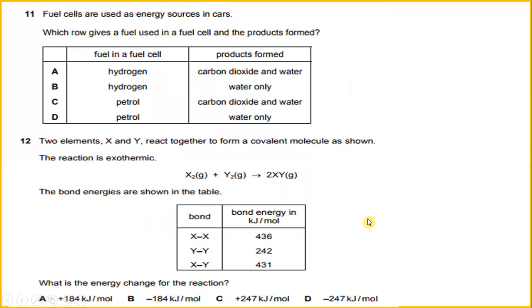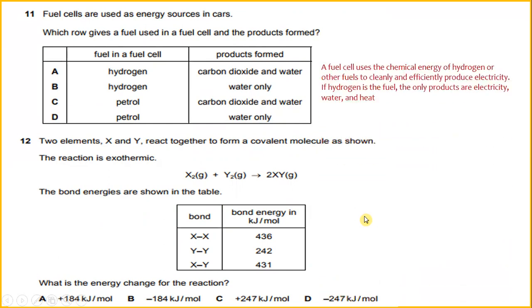Fuel cells are used as energy source in cars. Which will give the fuel used in a fuel cell and the product formed? Fuel cells use the chemical energy of hydrogen or other fuels to cleanly and efficiently produce electricity. If hydrogen is the fuel, the other products are electricity, water, and heat. So the answer will be hydrogen and water.